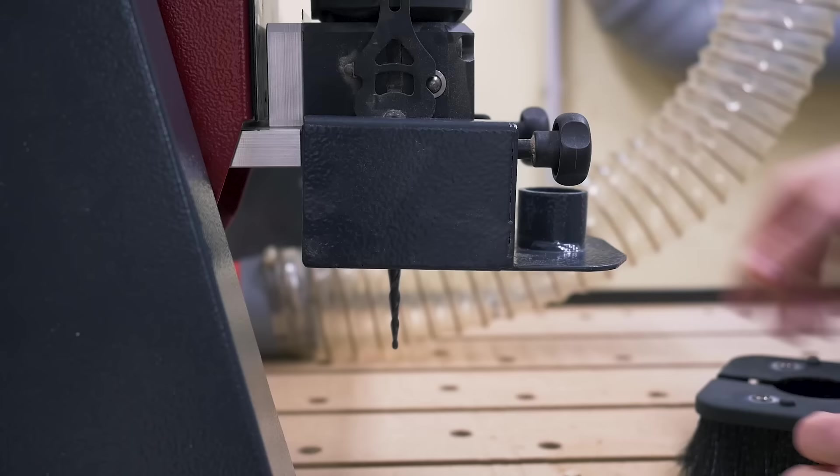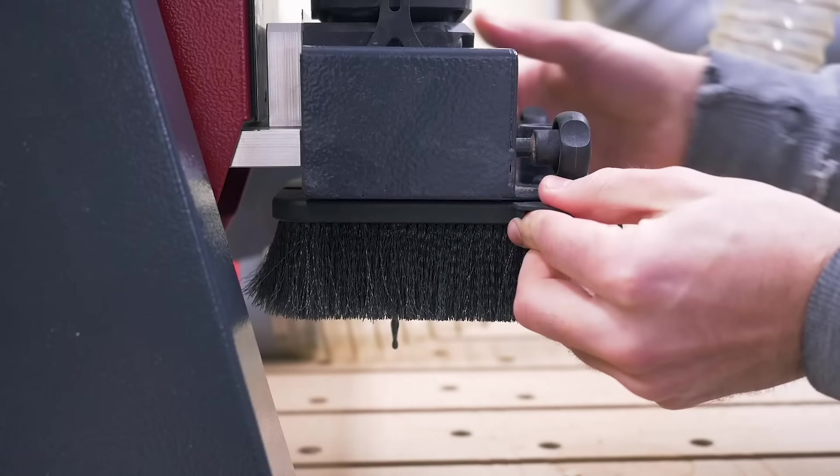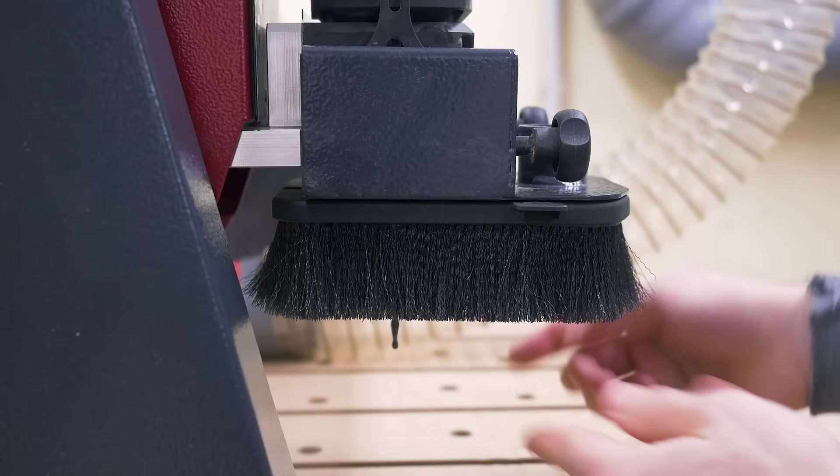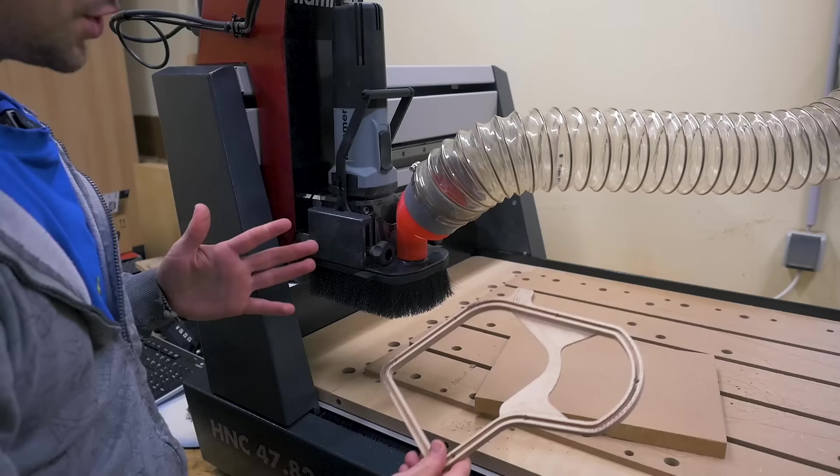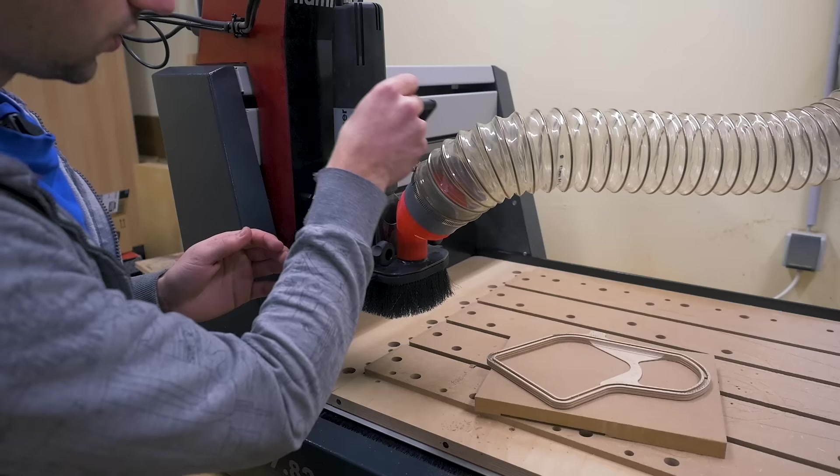Another issue is with long bits like this one, when you would need to plunge really deeply into your workpiece, there's the risk that you crash the brush into your workpiece when the machine is plunging. So this needs to be high enough. But then again, when it's high up and the bit is not plunging really deeply, then the brushes are not touching the workpiece surface, and then the whole dust collection is basically useless.